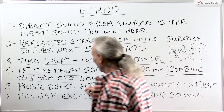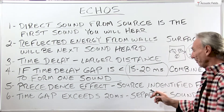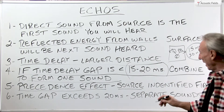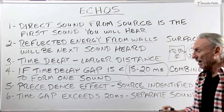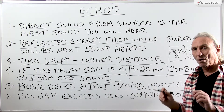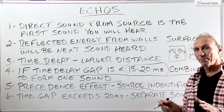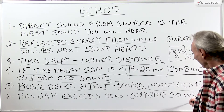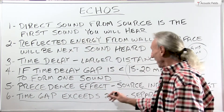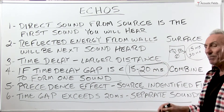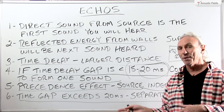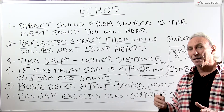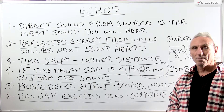Then there's something called the precedence effect — that is where you identify the source first, the direct sound first. Our goal is always to try to identify the source first and then minimize the impact of the environment or the room we're in. If we exceed this time gap of 20 milliseconds, we get into separate domains — we get the reflected sound and the direct sound and you can hear them separately. This is the beginning of echo.